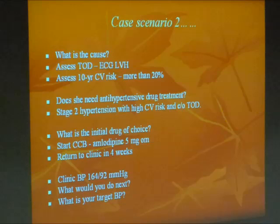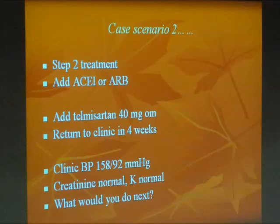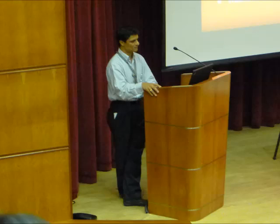To summarize: for all patients with hypertension, answer these key questions — what is the cause of hypertension, is it essential or secondary? Does the patient have target organ damage? What is the 10-year cardiovascular risk? Does the patient need antihypertensive drug treatment? If so, what drug to start with? What should be the target BP based on guidelines? And what is the monitoring plan? Check BP every 4 weeks when not at target, optimize medication at each visit, and don't simply defer — check BP during every visit for any reason.